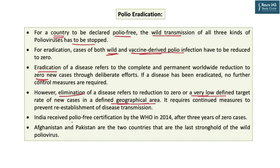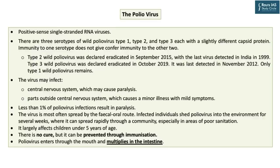India received polio-free certification from WHO in 2014. The last case registered in India was in 2011. Presently, only Afghanistan and Pakistan are countries where polio infection cases still keep coming up. The polio virus is a positive-sense, single-stranded RNA virus. There are three serotypes of wild polio virus named type 1, type 2, and type 3, with slight variations in the outer capsid protein. Immunity to one serotype does not confer immunity to the other two. Presently only type 1 polio virus remains — type 2 was eradicated in 2015 and type 3 was declared eradicated in 2019.